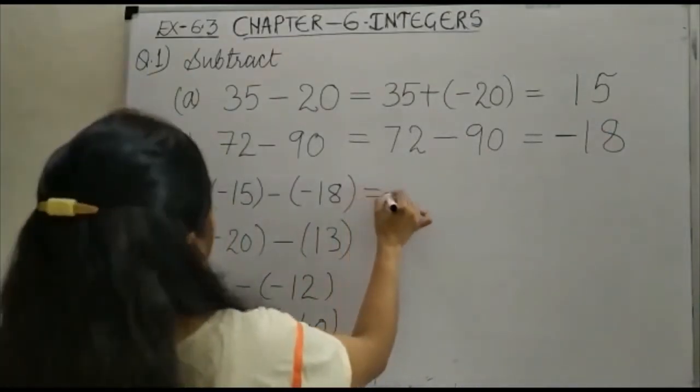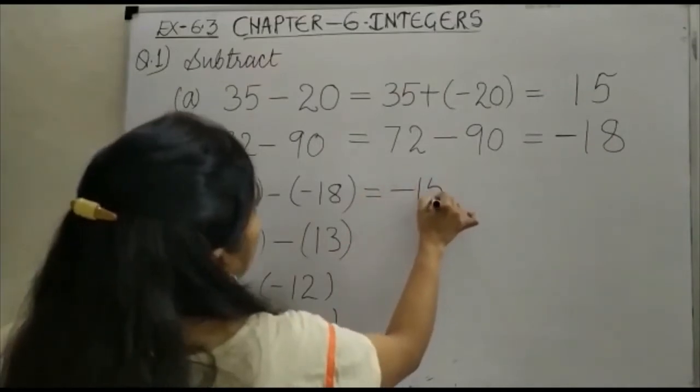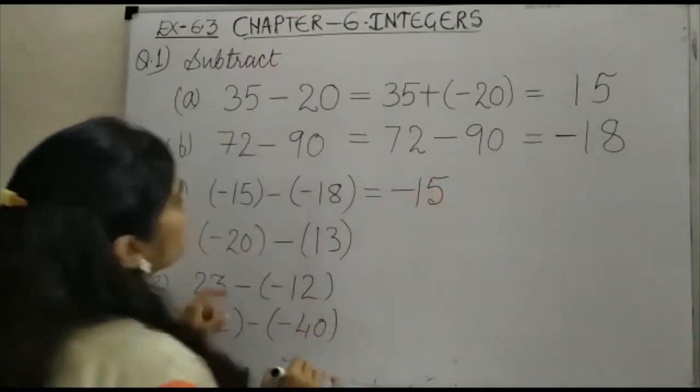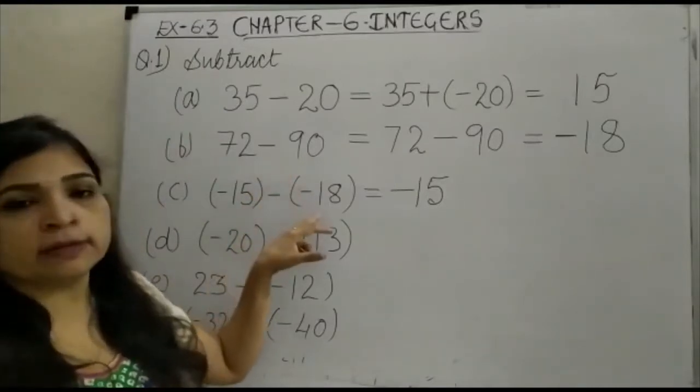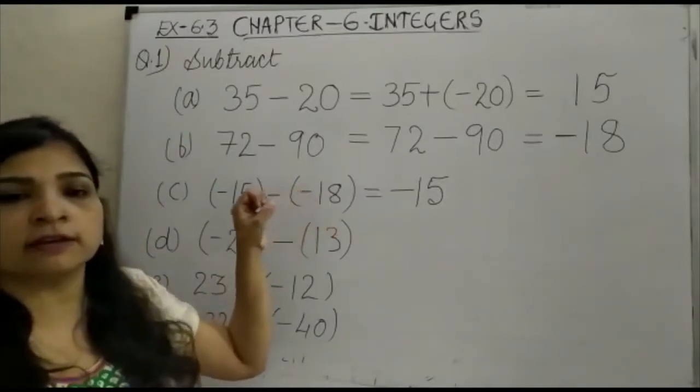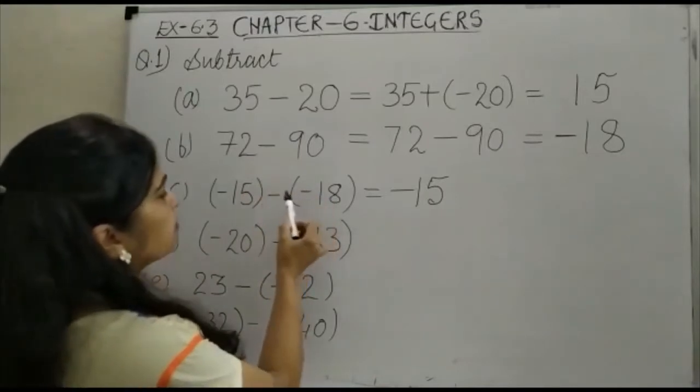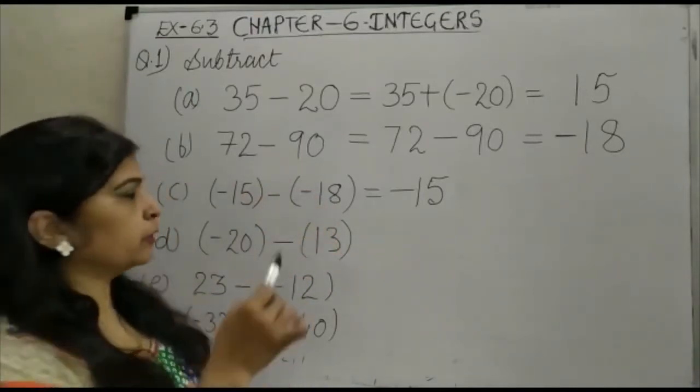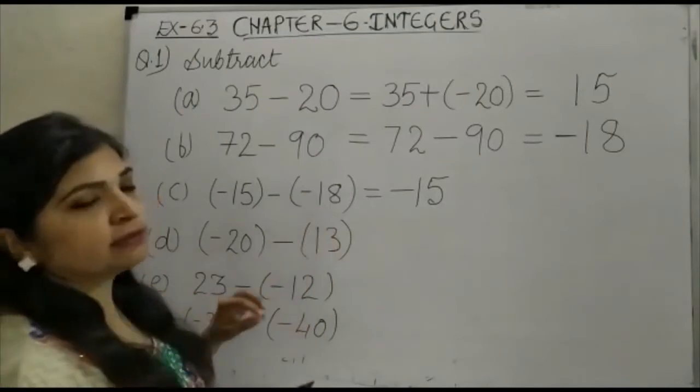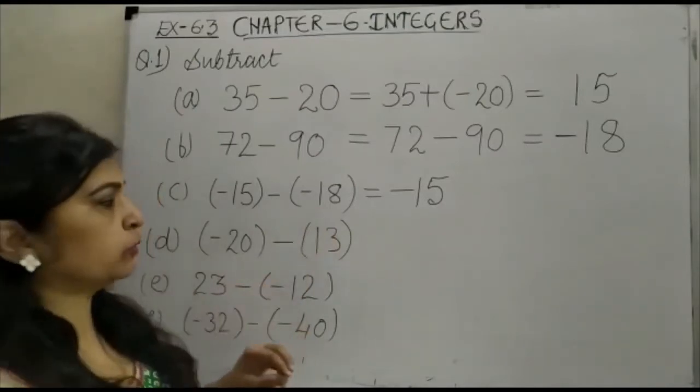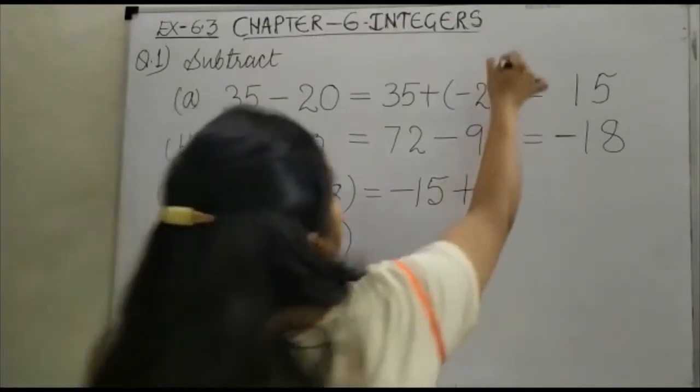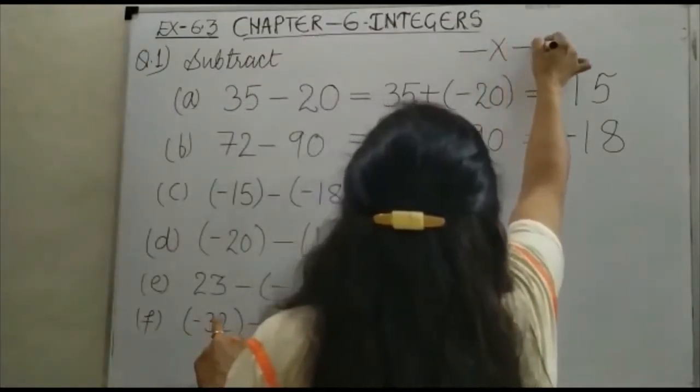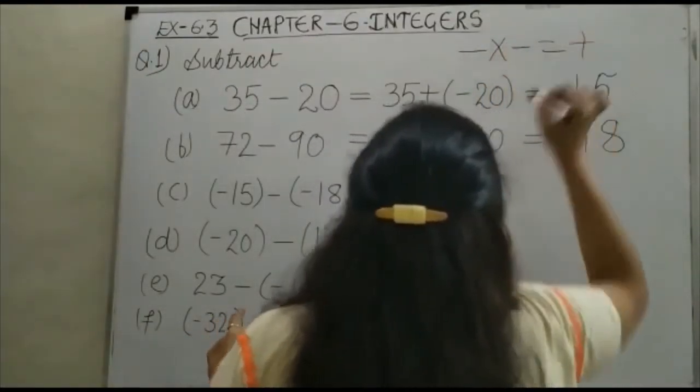Now in the next one it is minus 15 minus minus 18. Just see, whenever you are having minus sign outside the bracket and also minus sign inside the bracket, then minus into minus is always plus. So this sign gets changed into plus. Remember, minus into minus equals plus.